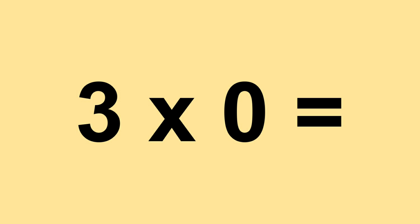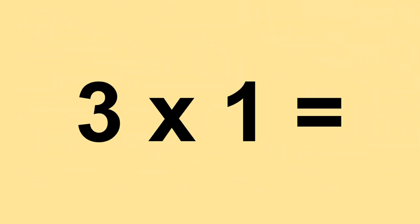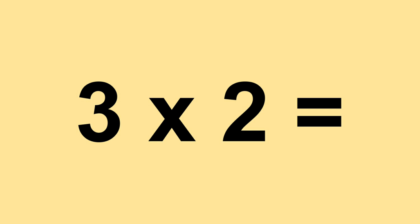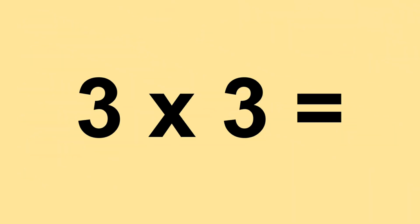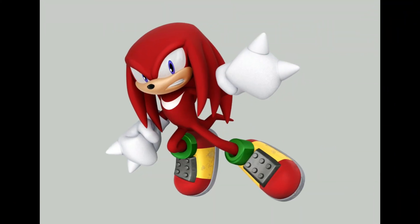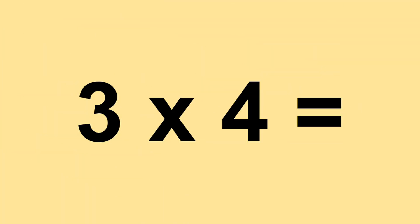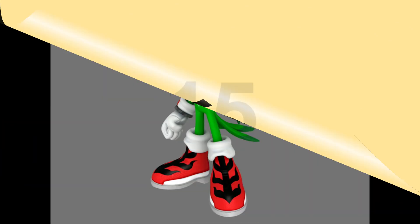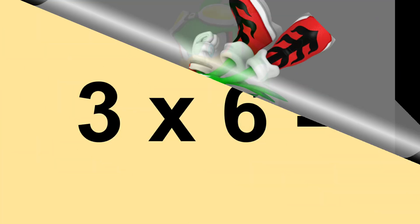Three times zero equals zero. Three times one equals three. Three times two equals six. Three times three equals nine. Three times four equals twelve. Three times five equals fifteen.